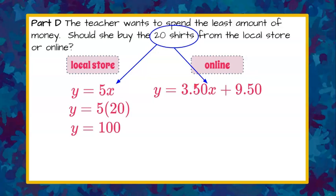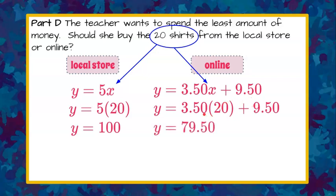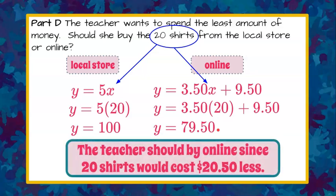Now let's go online. $3.50 times the 20 shirts plus the shipping fee. So we get $3.50 times 20 plus $9.50 is $79.50. We can conclude that the teacher should buy the t-shirts online since 20 shirts would cost $20.50 less than the local store.